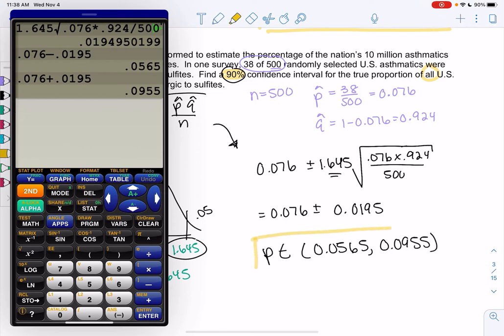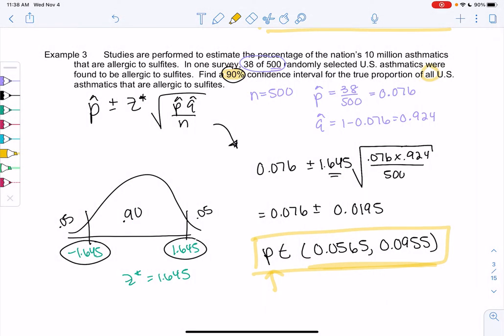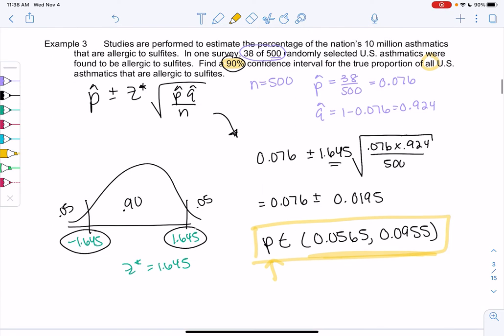So we get p is in the interval 0.0565 up to 0.0955. So we're pretty sure the true percent is somewhere in between these two numbers. So like 5.5 to 9.5%. And then this just tells me p for the true proportion. So p hat is from my sample. p is unknown, but we're pretty confident p is within these numbers.